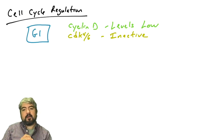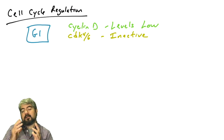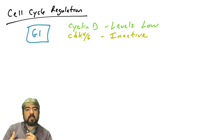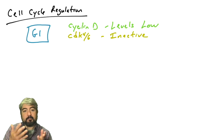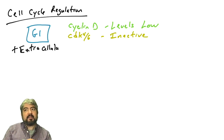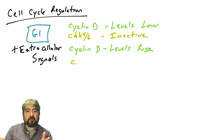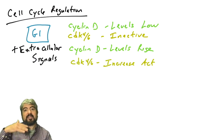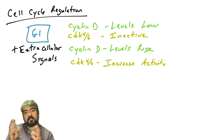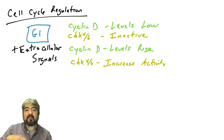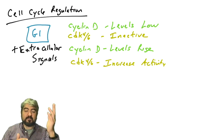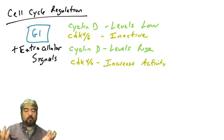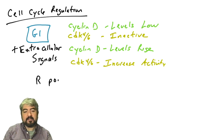In previous videos, we talked about cyclin D and how cyclin D is regulated in cells. When cells are in G1, cyclin D levels are very low, so CDK4 and 6 kinase is not active because its partner is not there. When cells get a signal to grow, like being exposed to growth factors, that leads to an increase in cyclin D production. Increasing levels of cyclin D increase the activity of CDK4 and 6 kinase. But what does that kinase do? We're going to introduce that in this video.